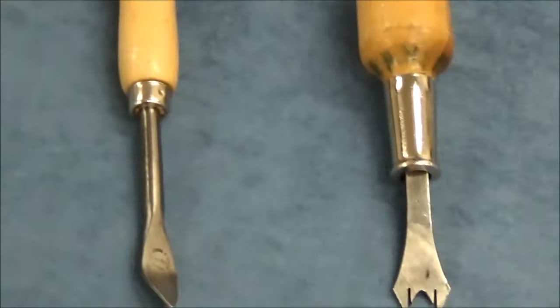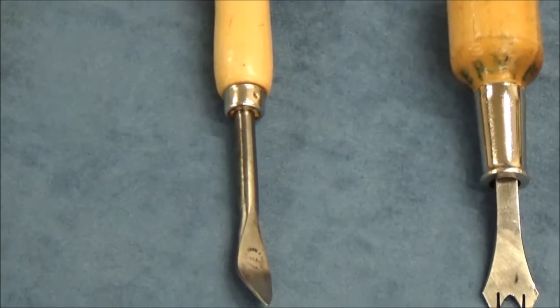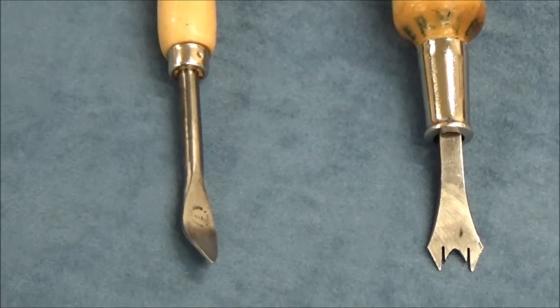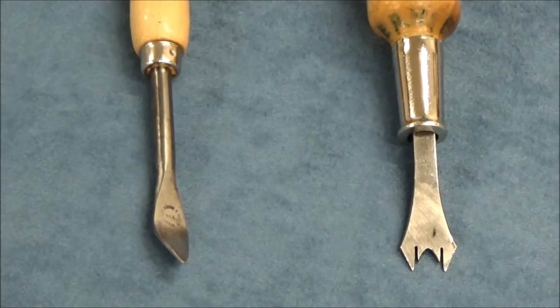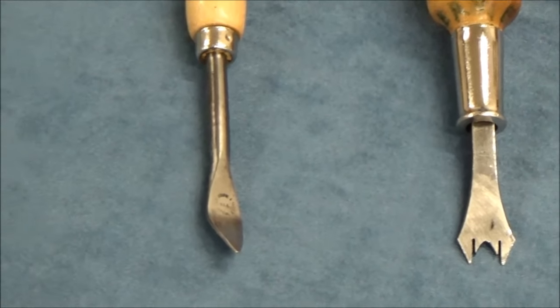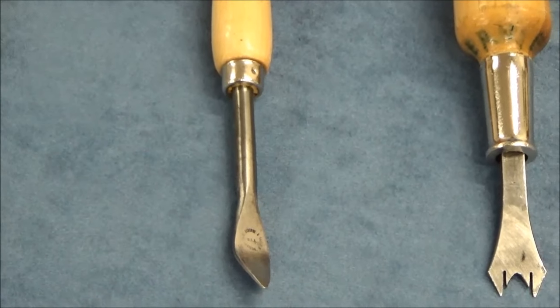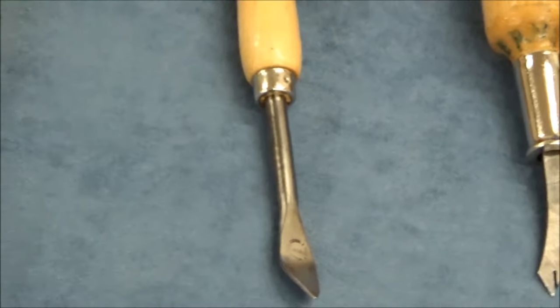The second staple puller we have here today is the Osborne Spoonbill Staple Puller. I like this one when I'm taking staples out of vinyl or maybe a faux leather or leather. It seems to work pretty good and they tell me it's the number one selling staple in Europe.